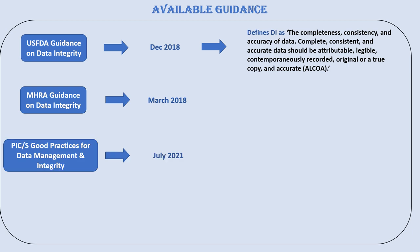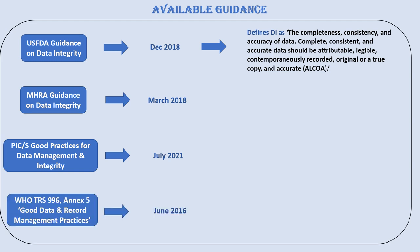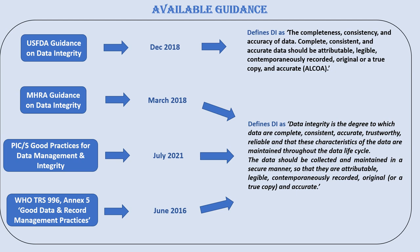Recently, PIC/S has released the Good Practices for Data Management and Integrity guidance in July 2021. There is also WHO TRS 996 Annex 5, Good Data and Record Management Practices, issued in June 2016. All these guidances define data integrity as the degree to which data are complete, consistent, accurate, trustworthy, and reliable, and that these characteristics are maintained throughout the data life cycle. Data should be collected and maintained in a secure manner so that they are attributable, legible, contemporaneously recorded, original or a true copy, and accurate.